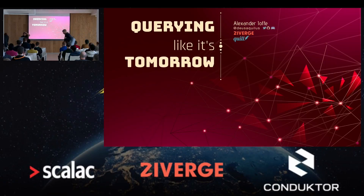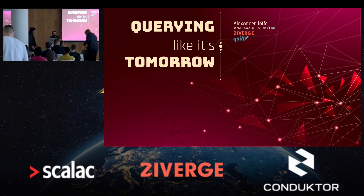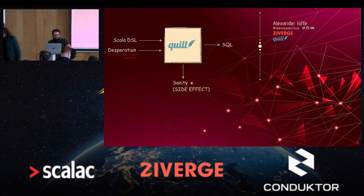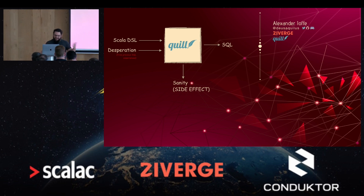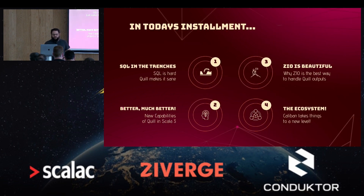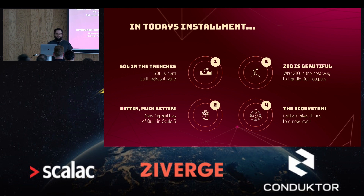Hi. I'm Alexander Yaffe. I'm the lead maintainer of Quill. It is a library made to bring back the sanity into working with SQL. And as a side effect, you become sane. Normally working with SQL is not sane. This library is supposed to make it become sane. We'll talk about why that's the case, some of the new capabilities that Scala 3 brings, why ZIO is probably the best way of handling database effects in general, and how things from the ecosystem like Caliban really take things to the next level.